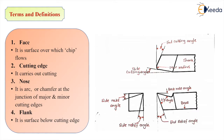We are going to see the terms and definitions for the single point cutting tool. This is the orthographic view — front view, side view, and top view. The face is the portion over which the chip flows. The cutting edges carry out the cutting operation. The nose is the arc or chamfer at the junction of the major and minor cutting edge. The flank is the surface adjacent to the cutting edges — major flank and minor flank.